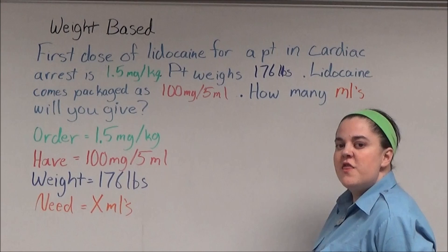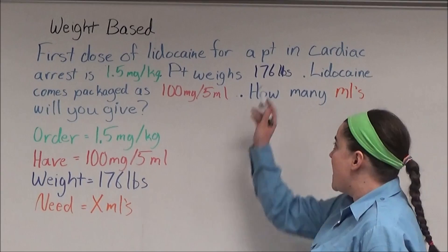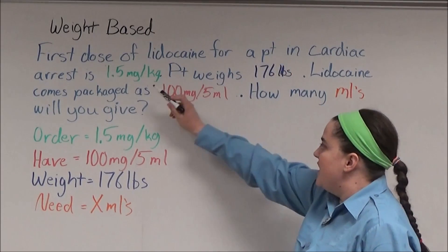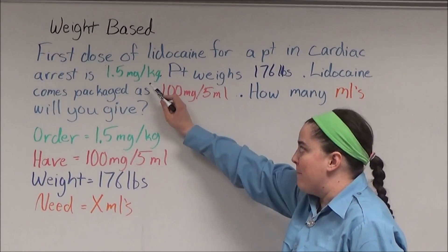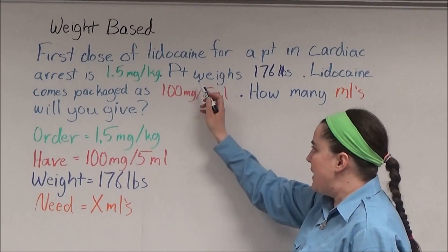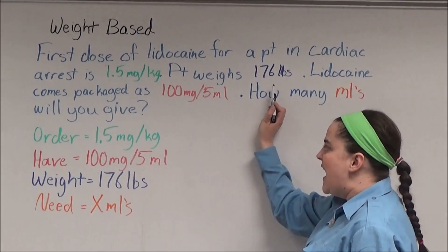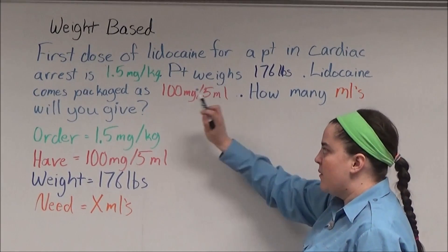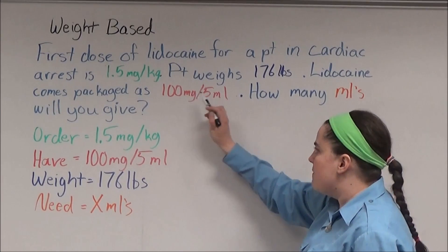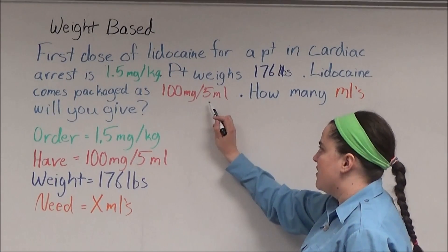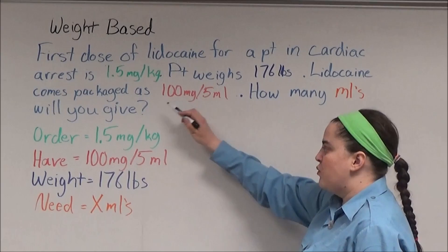The first dose of lidocaine for a patient in cardiac arrest is 1.5 milligrams per kilogram. The patient weighs 176 pounds, and lidocaine comes packaged as 100 milligrams in 5 milliliters. How many milliliters will you give?